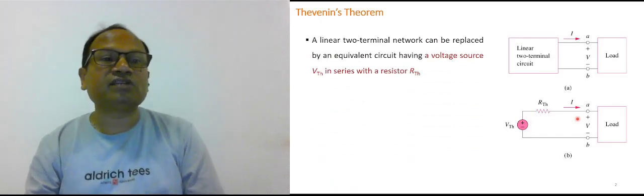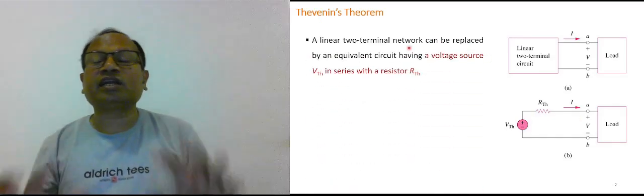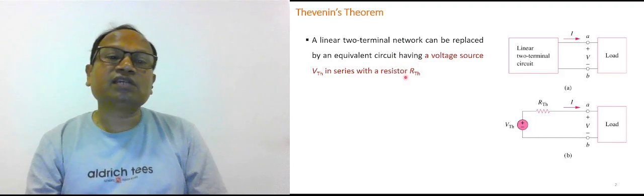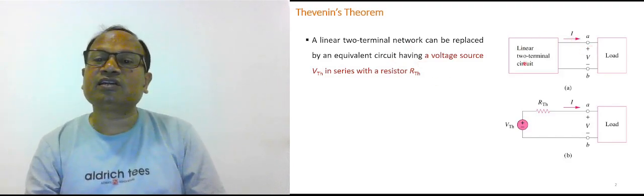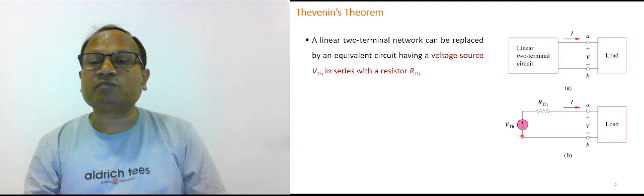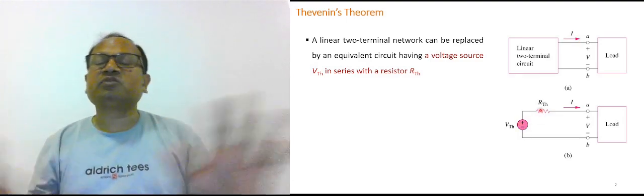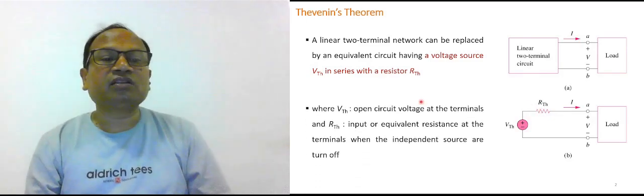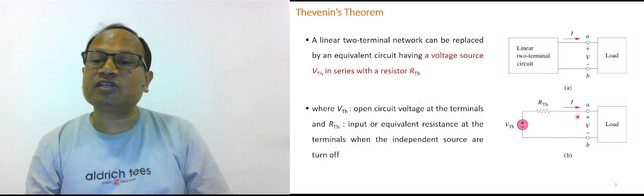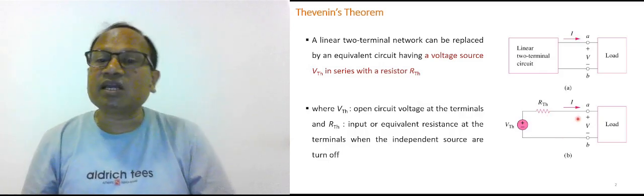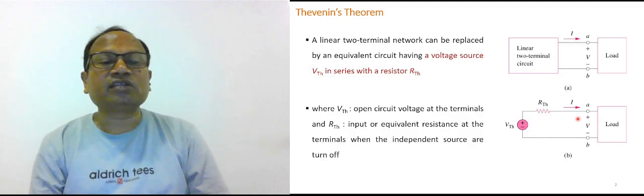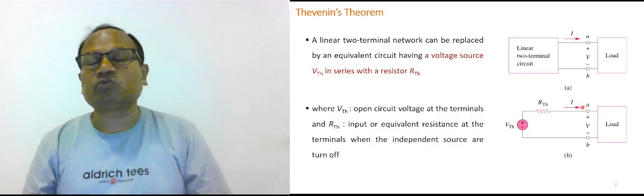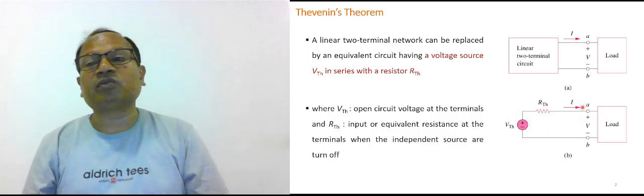So Thevenin theorem — any two-terminal linear network can be replaced by an equivalent circuit having a voltage source in series with a resistance. As you can see, a linear two-terminal circuit is being replaced by a single voltage source in series with a resistance called Thevenin resistance. The Thevenin voltage is the open circuit voltage across the two terminals, and Thevenin resistance is the equivalent resistance of the network calculated between those two terminals.